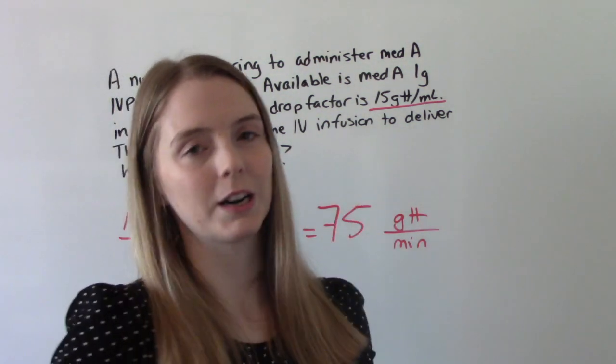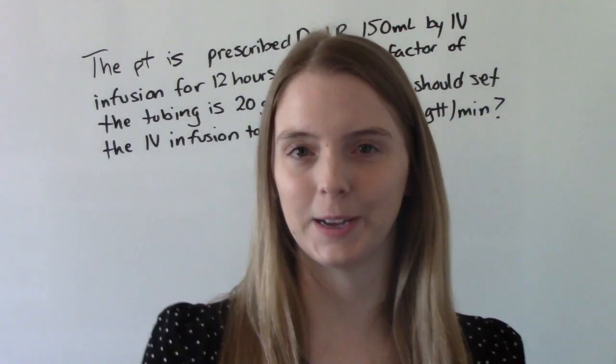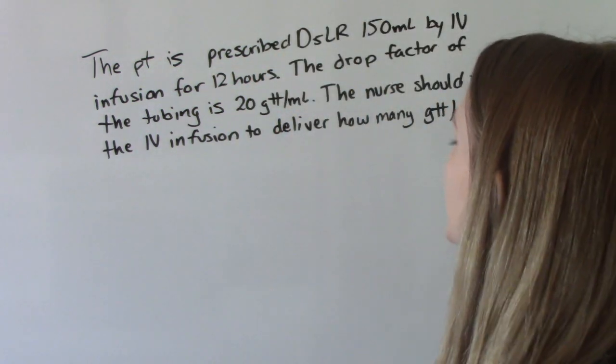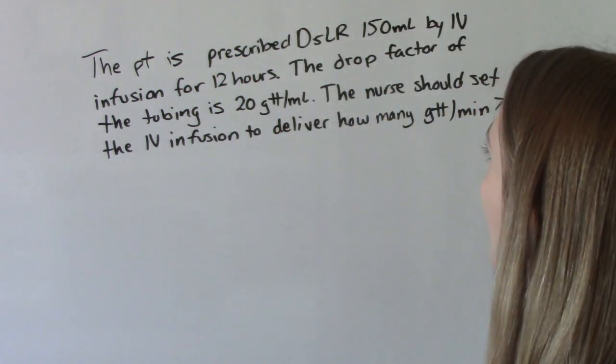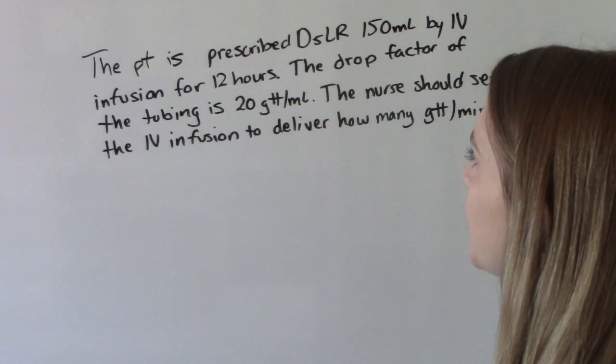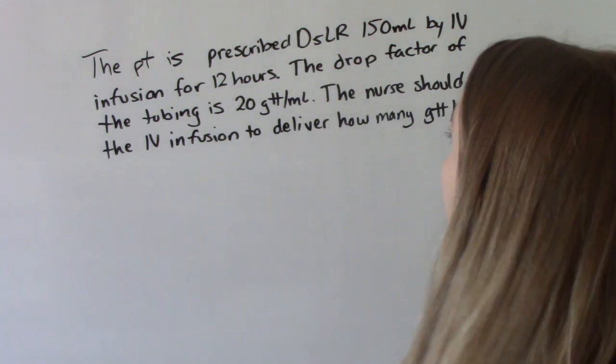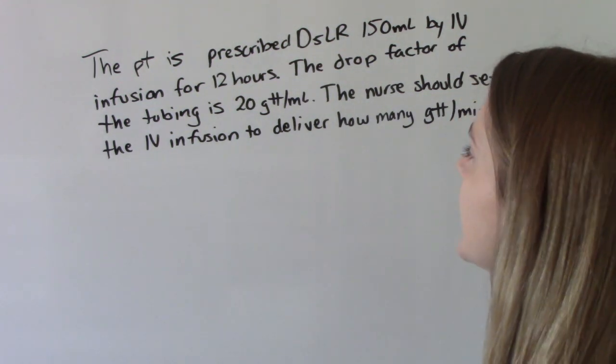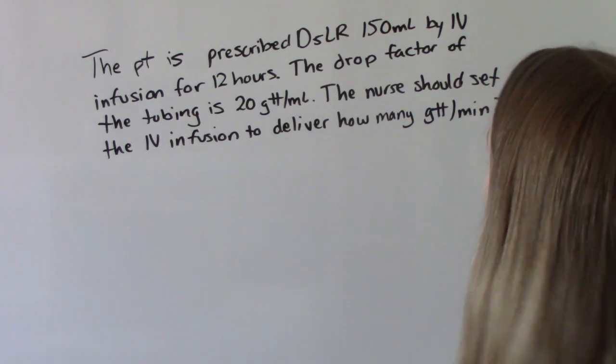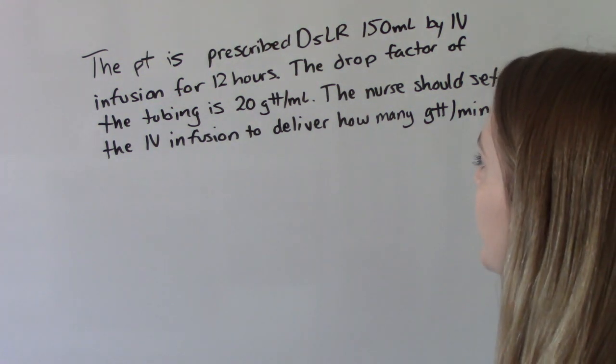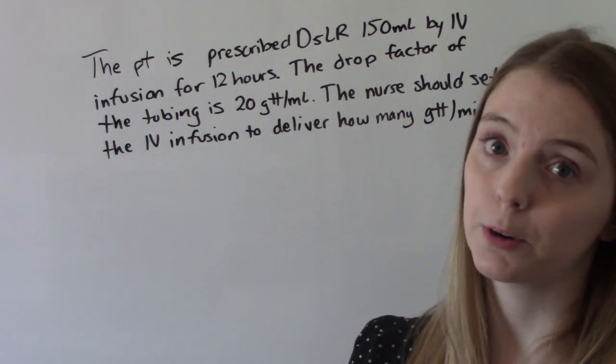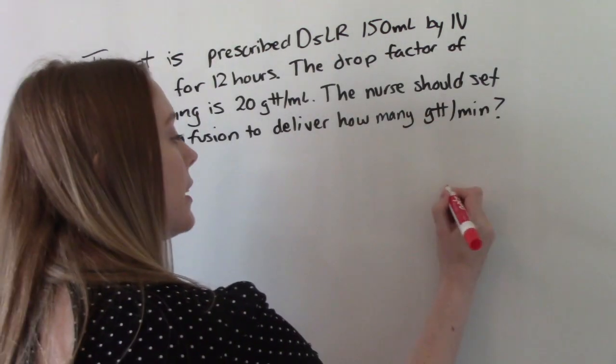Let's do one more. Last one. The patient is prescribed D5LR, 150 ml by IV infusion for 12 hours. The drop factor of the tubing is 20 drops per ml. The nurse should set the IV infusion to deliver how many drops per minute. So we're looking for drops per minute.